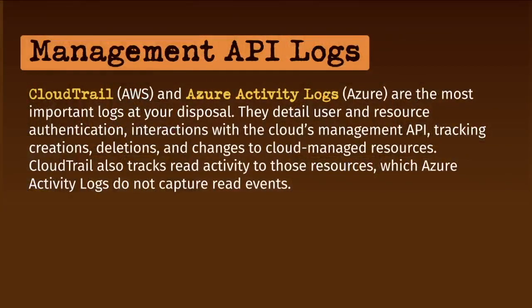What all of these say — all the stuff that you can do — the most important thing you can do is to turn on and use management API logs. Management API logs describe the interactions between you or other resources and the cloud environment itself. In Amazon, this is called CloudTrail.